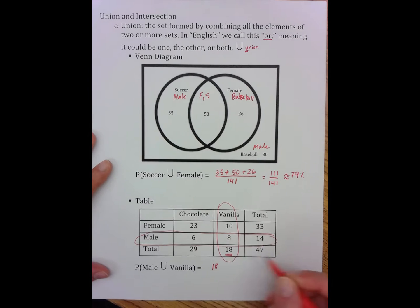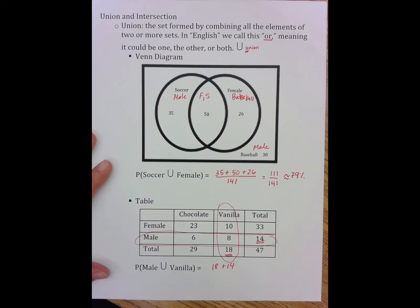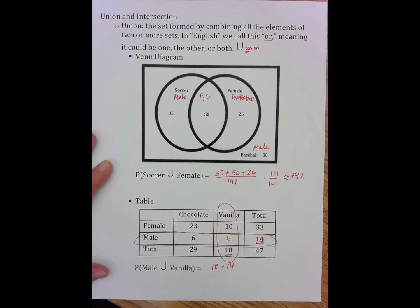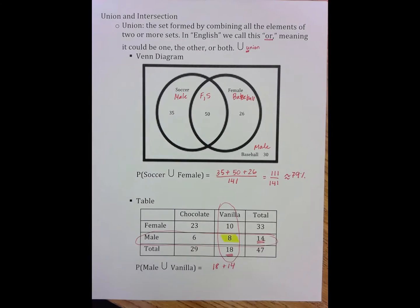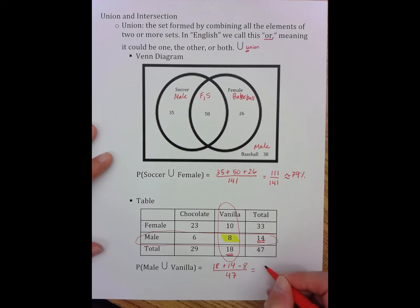it's 18. That's right there. Male, that's 14. It's right there. But if you look carefully at what I've circled, we've actually overlapped. And we've overlapped here, which means it isn't 18 plus 14. It's actually 18 plus 14 minus 8 out of a total of 47, which gives me 24 over 47, which is approximately 51%.